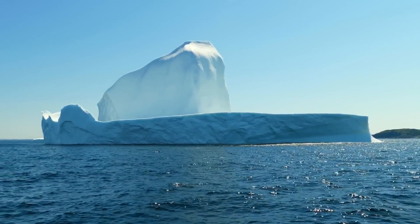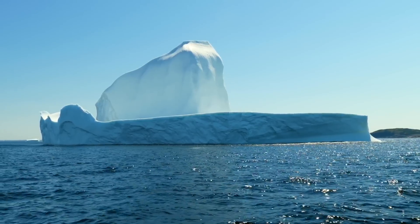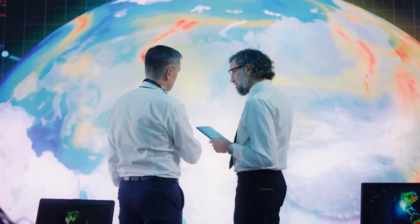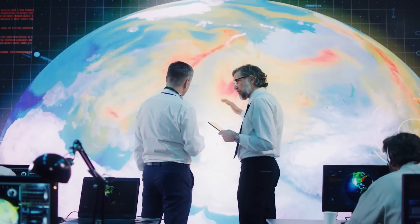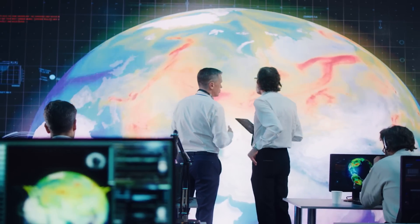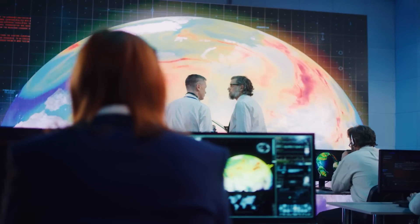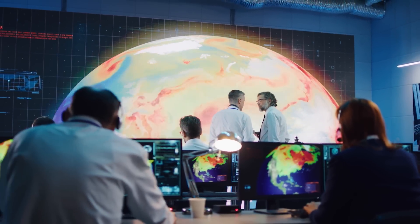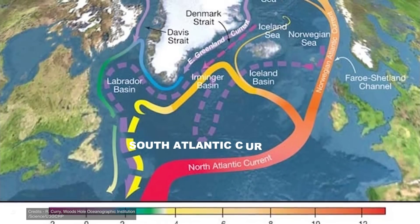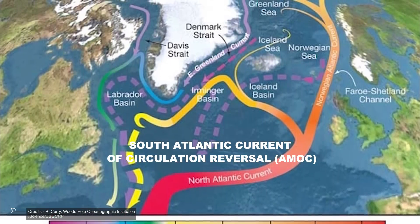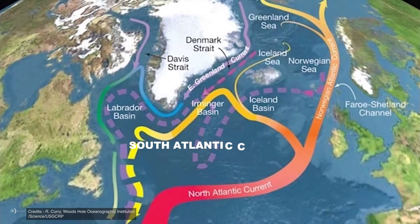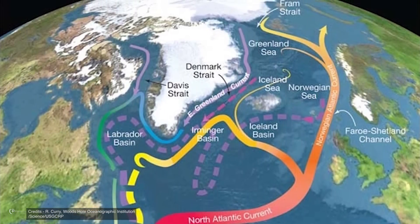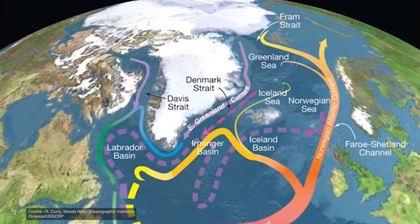Changes in ocean circulation are a significant concern in the context of current climate change. Global warming can affect the salinity and temperature of ocean water, altering thermohaline circulation. Melting glaciers and polar ice sheets contribute to freshwater inflows into the North Atlantic, which could weaken the Atlantic Meridional Overturning Circulation, a vital component of the ocean conveyor belt. However, can humans influence thermohaline circulation?